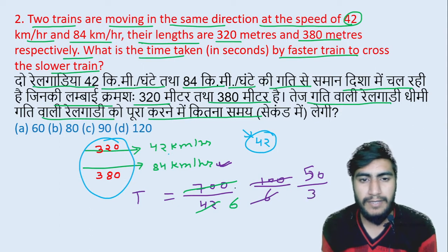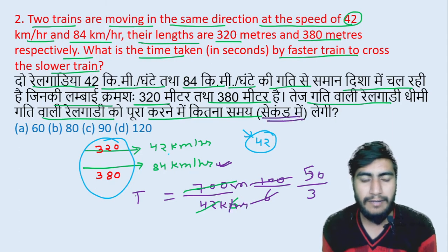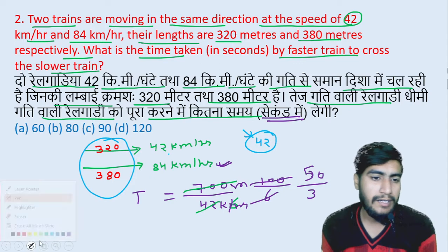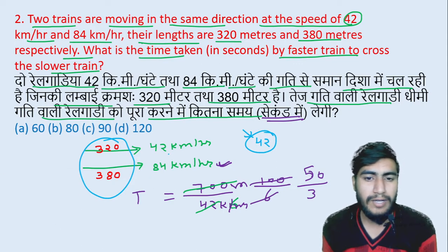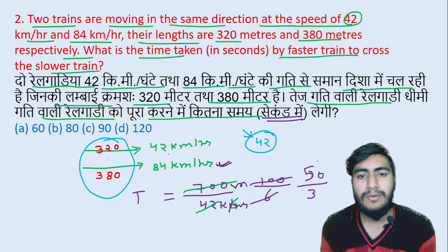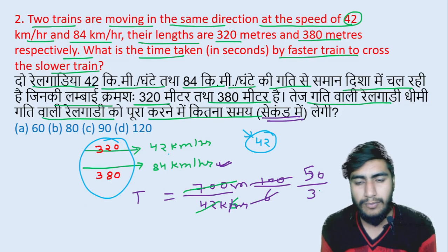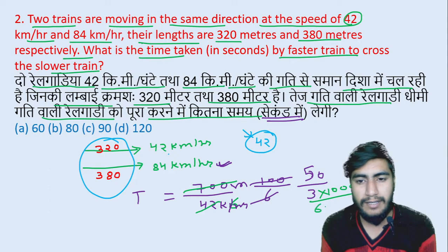Now check the units: distance is in meters and speed is in kilometers per hour, but time needs to be in seconds. So we need to convert kilometers per hour to meters per second. To convert, multiply by 1000 and divide by 3600 (i.e., 60 times 60).